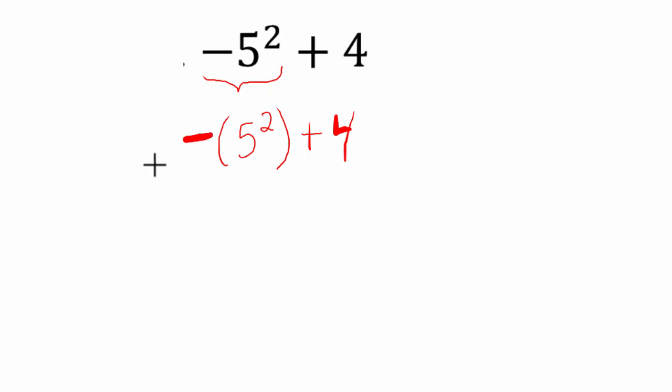So here, with subtraction and parentheses, the way I've rewritten this, we have to deal with the parentheses first. So five squared, that means five times five, it's twenty-five, and we're subtracting it. And then we're adding four.